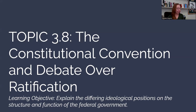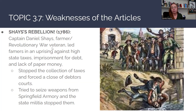That is your information for topic 3.7. For topic 3.8, we are going to talk about how Americans are going to fix the problems of the Articles of Confederation through the Constitutional Convention. Go ahead and read that chapter in your textbook and then come back here to watch the video. Thank you.